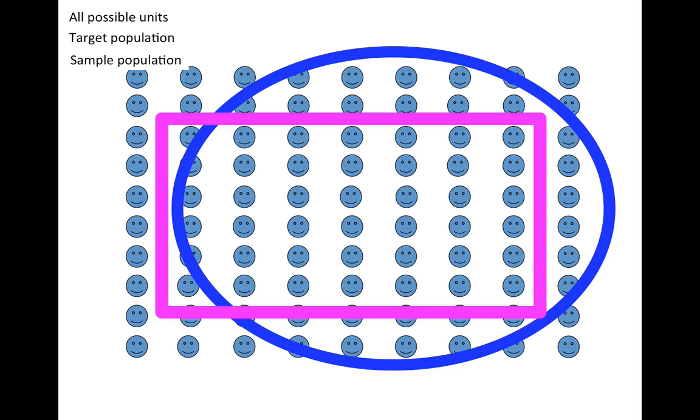Of course, your goal is to come up with a sample population that is as close to the target population as possible. So again, the sample population is a set of units that have some chance of ending up in your study.